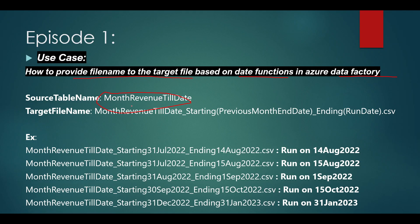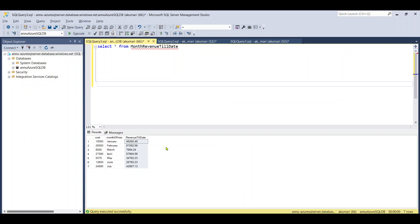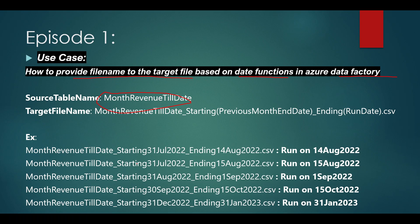Our table name in the source SQL server is 'month_revenue_till_date'. Let me show you this table in SQL Server — you can see this table is present and has some data related to revenue for each month. Our use case is we want to load that table into a CSV file where the file name should be dynamically generated based on the pipeline run date.